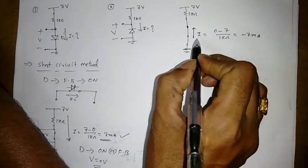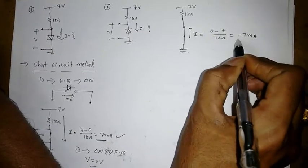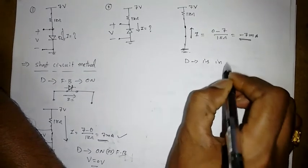Now if I assume this diode is in forward bias. That means anode to cathode current should be positive. But we got negative value. That means diode is in reverse bias.